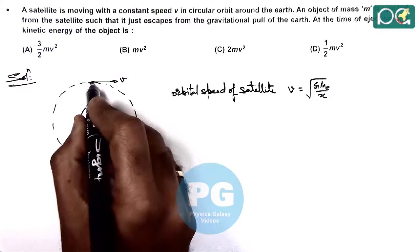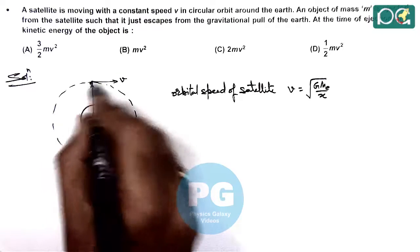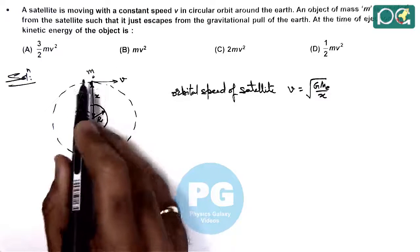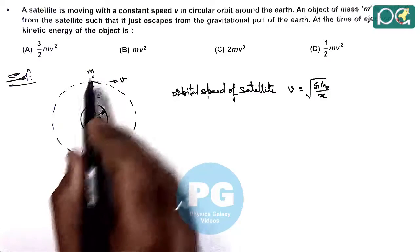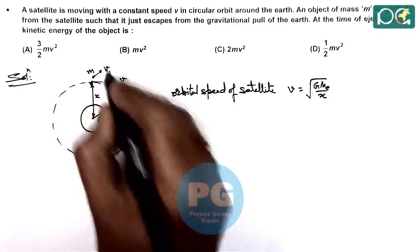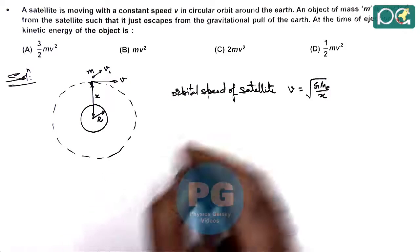At a distance x from the center of Earth, in the orbit of radius x, a small mass m escapes from the satellite. It is ejected with velocity v1 such that it escapes from the gravitational pull of Earth.